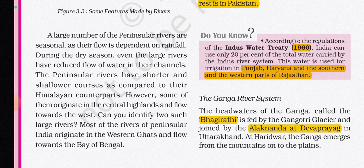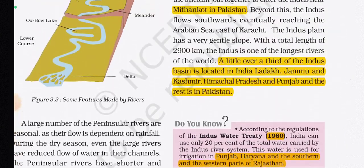A large number of the Peninsular rivers are seasonal, as their flow is dependent on rainfall. During the dry season, even the large rivers have reduced flow. The Peninsular rivers have a shorter and slower course compared to their Himalayan counterparts. Some originate in the central highlands and flow towards the west. Most rivers of Peninsular India originate in the Western Ghats and flow towards the Bay of Bengal.